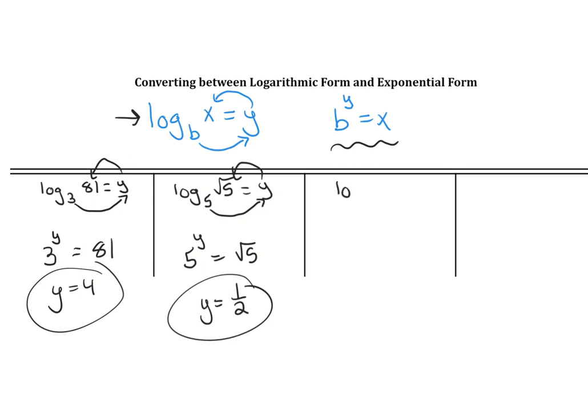Let's keep going. Log base 7 of 1 over 49. 7 to what power equals 1 over 49? That would be to the power of negative 2.